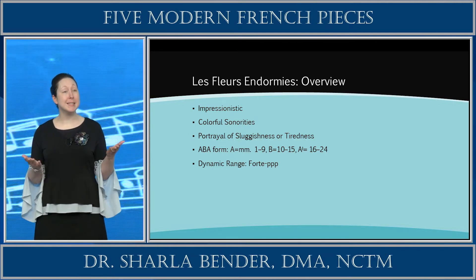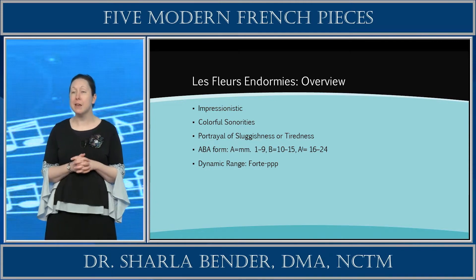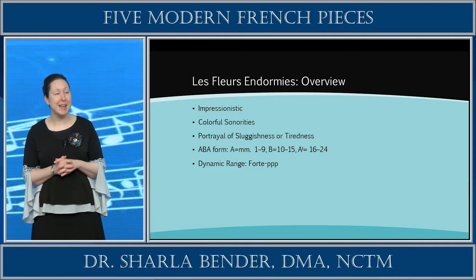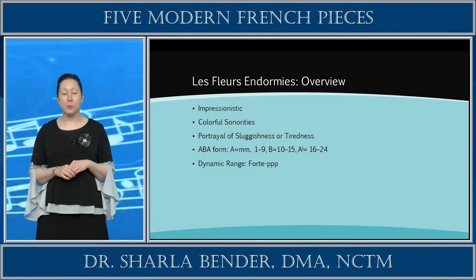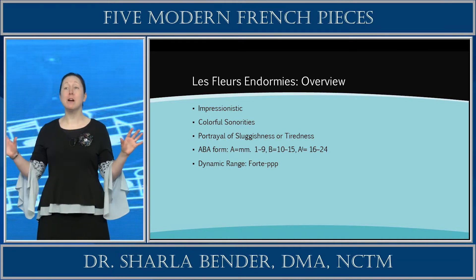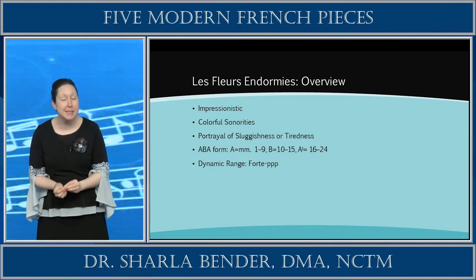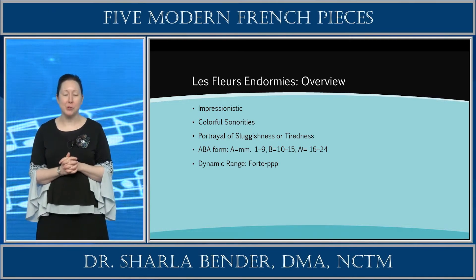The form is a succinct ABA form. The first nine measures is the A section, followed by B in measures 10 through 15, and then a return to A prime in measures 16 through 24. Lastly, this piece has a large dynamic range from forte to pianissimo — a fun point to explore with your student.